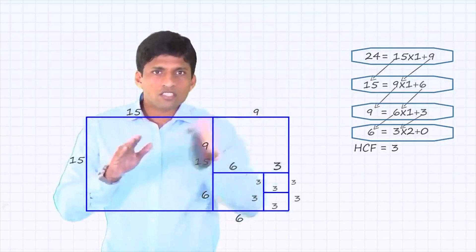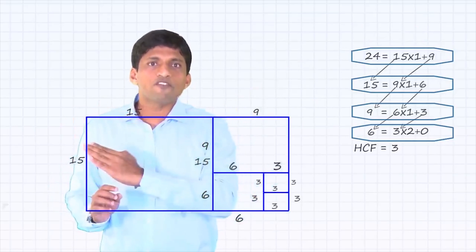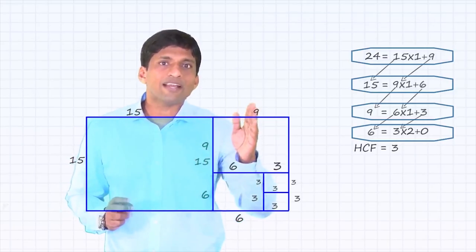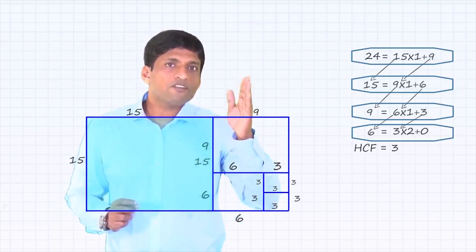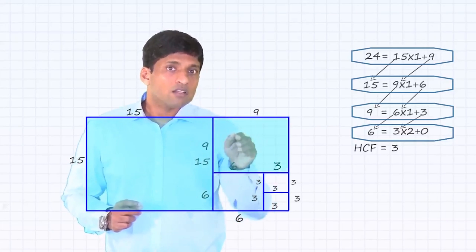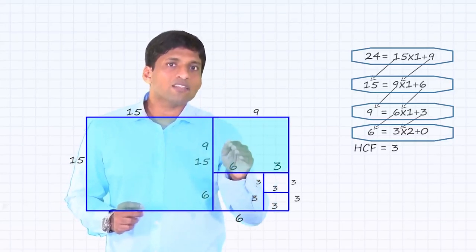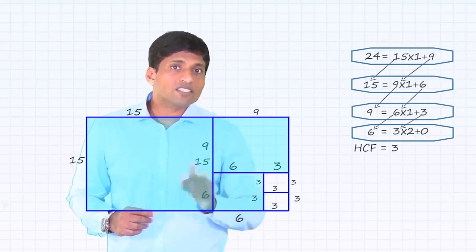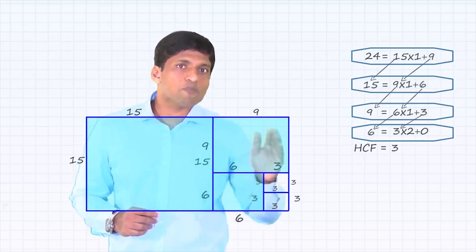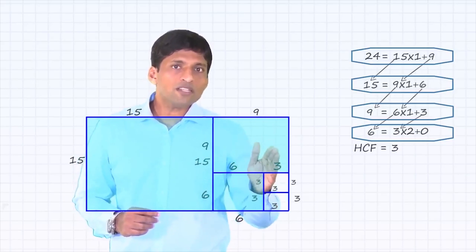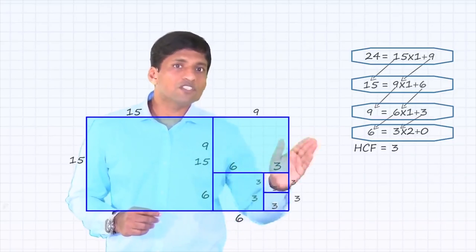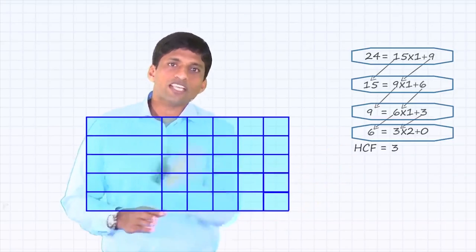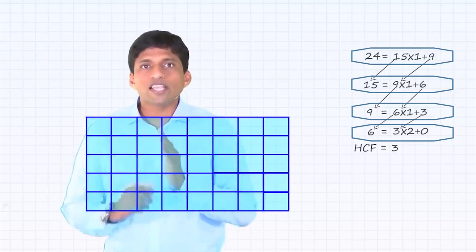Initially it's a 24 by 15 rectangle. Once you take out the 15 by 15 square, the remaining rectangle is a 15 by 9 rectangle, where 15 is the length and 9 is the breadth. Then, once you take out a 9 by 9 square, the previous breadth 9 becomes the length in a 9 by 6 rectangle. From the 9 by 6, once you take out the 6 by 6 square, the previous breadth 6 becomes the length next — giving a 6 by 3 rectangle. From this 6 by 3, you can take two square tiles of the same size where nothing is left out, and it's completely filled.